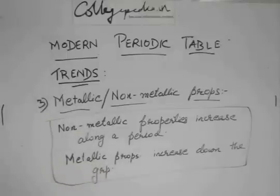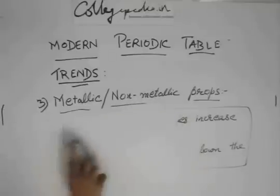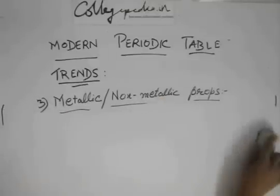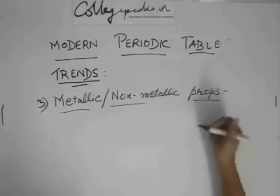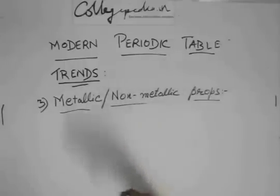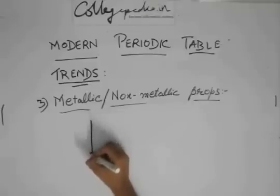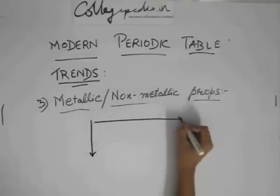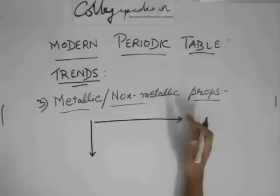So this is the case for metallic and non-metallic properties. There will be questions asking which is the most metallic element and which is the most non-metallic element in the periodic table. If you see, metallic properties increase down the group and decrease along a period. So if you go to the right side, you get non-metals.